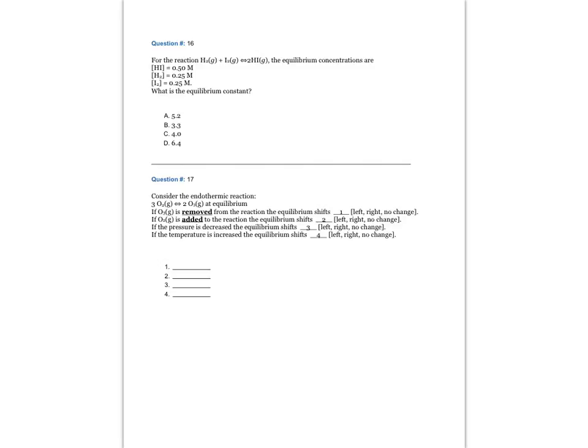Question number 16. For the reaction H2 gas plus I2 gas in equilibrium with 2 moles of HI gas, the equilibrium concentrations are: HI = 0.50 M, H2 = 0.25 M, I2 = 0.25 M. What is the equilibrium constant? The answer is C: 4.0.